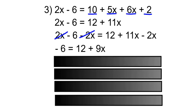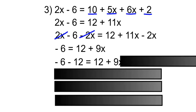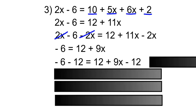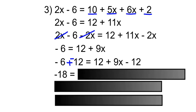12 plus 11x minus 2x is 9x. To remove the 12, we subtract 12 from both sides. So minus 6 minus 12 is equal to 12 plus 9x minus 12. Instead of saying minus 12, we can change it to say plus negative 12. Therefore, we have 6 negatives and 12 negatives, which equal 18 negatives. And that equals 9x, as the 12s cancel.